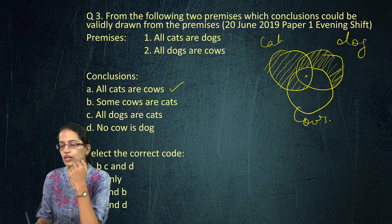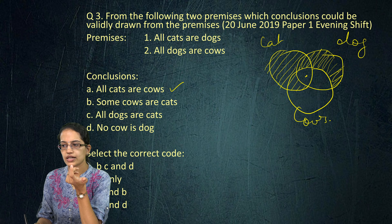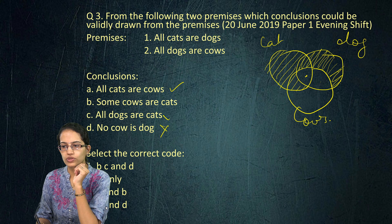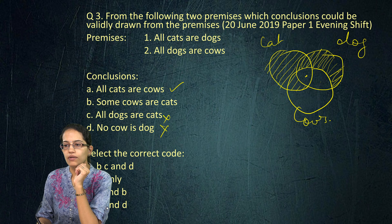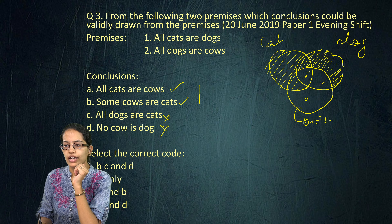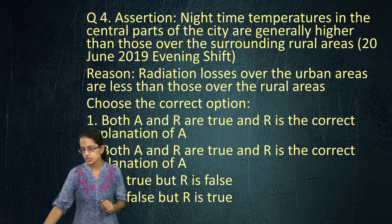Now, 'no cow is dog' — I cannot say because cow can be in multiple regions, so this becomes incorrect. 'All dogs are cats' — I cannot say because dogs can be in other regions too, so this is also incorrect. 'Some cows are cats' — that is a correct statement because cows can appear in regions that overlap with cats. So you have A and B as the right options here.